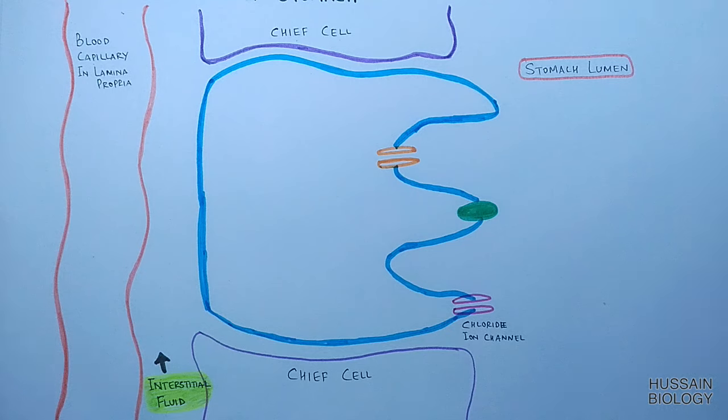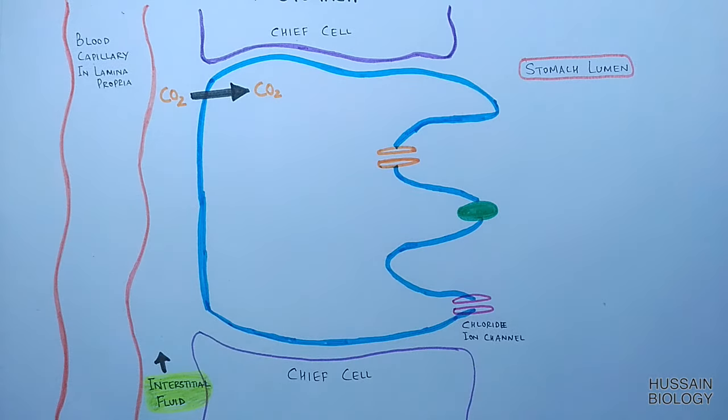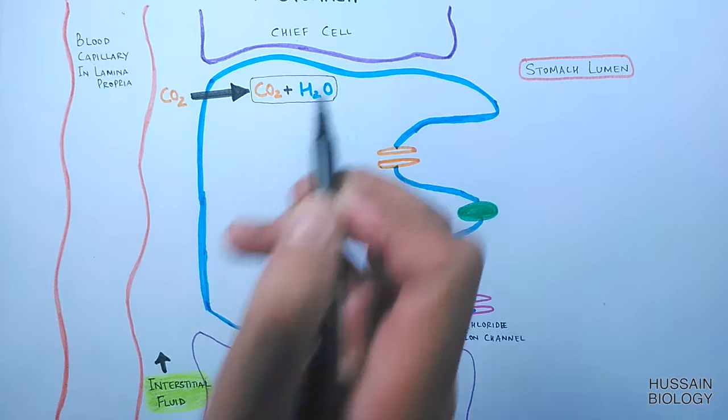Now let's see the different reactions occurring inside the parietal cell to generate HCL. Carbon dioxide from the interstitial fluid enters the parietal cell and combines with water. From this reaction we get carbonic acid, H2CO3.